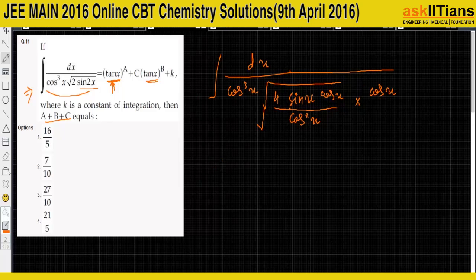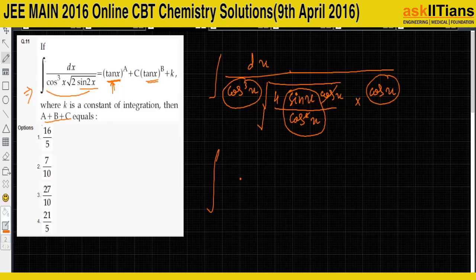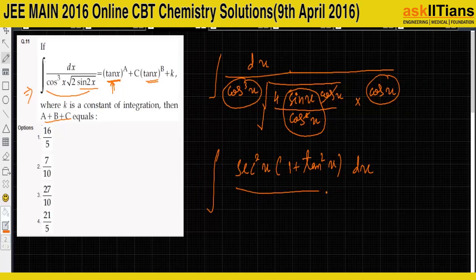After dividing inside the root by cos²(x), the cos(x) terms cancel and sin(x)/cos(x) becomes tan(x). The remaining cos(x) combined with cos³(x) gives cos⁴(x) in the denominator, which moves to the numerator as sec⁴(x). This can be written as sec²(x) · (1 + tan²(x)) dx divided by under root of 4·tan(x).